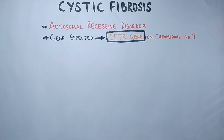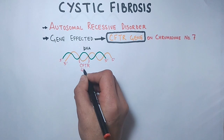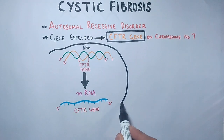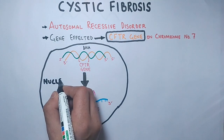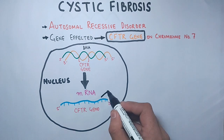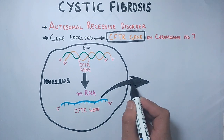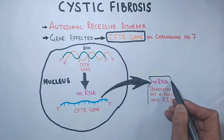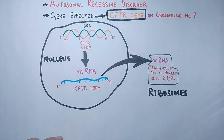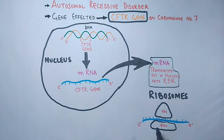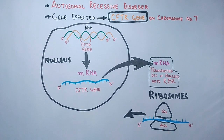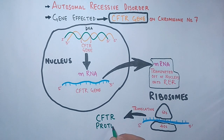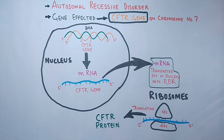The CFTR gene is present on DNA and transcribes into mRNA via the transcription process, which happens within the nucleus. After that, the mRNA is transported out of the nucleus and gets attached to the rough endoplasmic reticulum, where ribosomes take in the mRNA molecule and initiate the translation process.